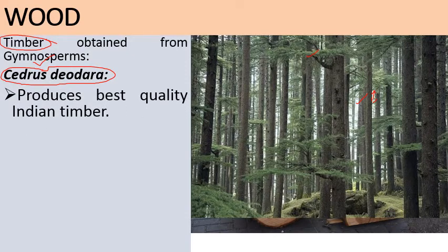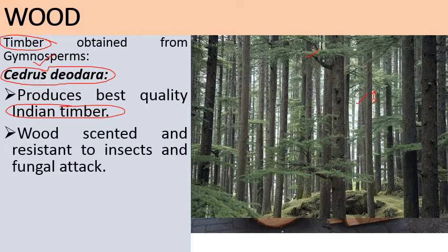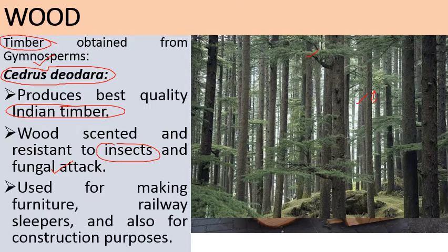Cedrus deodara produces the best quality Indian timber wood. The wood is scented and resistant to insects and fungal attack because it contains essential oils and resins, which prevent the action of insects and fungal attack. This superior quality wood is used for making high-quality furniture with long life, railway sleepers, and for the construction of buildings.